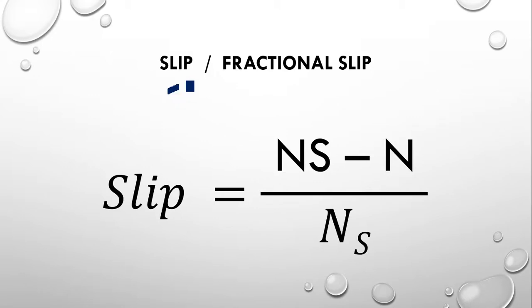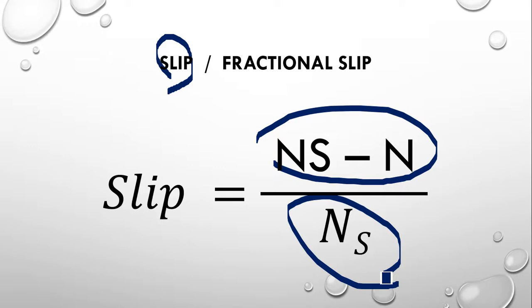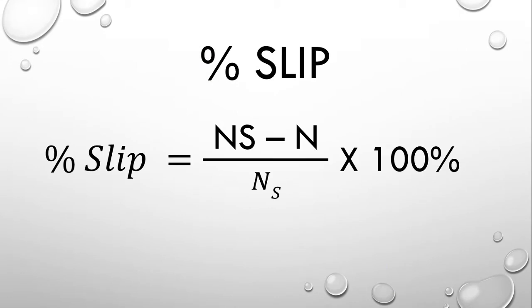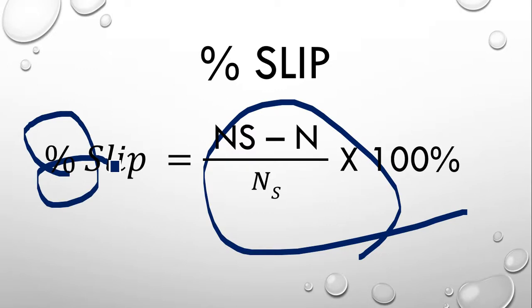Now, slip is defined as the ratio of slip speed to synchronous speed: S = (N_s − N) / N_s. Percentage slip = S × 100. These three new terms — slip speed, slip, and percentage slip — have now been described.